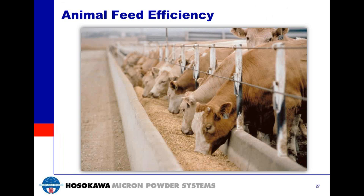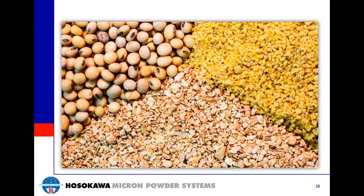Particle size reduction is the first step in the feed manufacturing process. By increasing the material exposed to the animal's digestive system, it leads to more complete digestion and better feed efficiency. Animals such as cattle and sheep have long, complex digestive tracts requiring less processed feed, while pigs have a short, simple digestive system and benefit from more highly processed feed. If feed has an inaccurate particle size, animals won't receive the proper nutrients to gain weight, increasing the farmer's daily costs and reducing profitability.